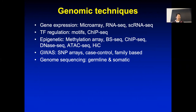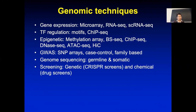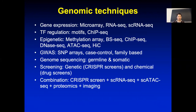and somatic mutation, which is what happens in cancer cells — different from your normal cells. That is the difference between a growing tumor and your blood. We also talk about screening, which includes genetic screens like CRISPR screens, or chemical screens which are drug screens.